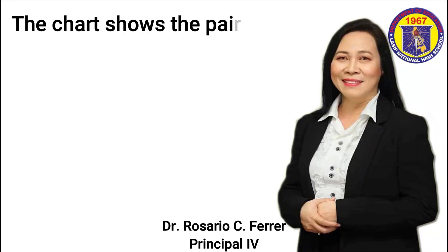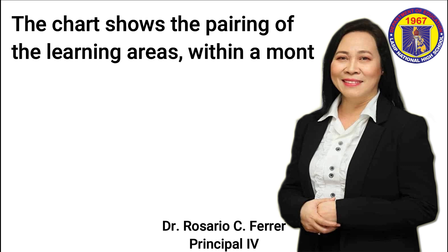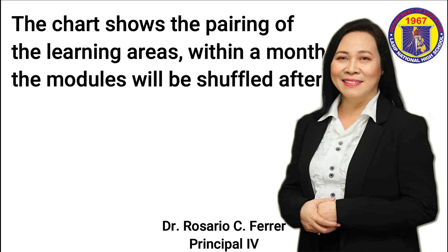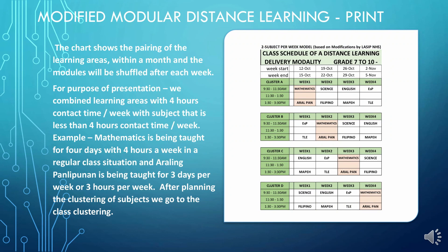The chart shows the pairing of learning areas within a month, and the modules will be shuffled after each week. For purposes of presentation, we combine learning areas with 4 hours contact time per week with subjects that have less than 4 hours contact time per week. For example, mathematics is taught for 4 days with 4 hours a week in a regular class situation, and Araling Panlipunan is taught for 3 days per week or 3 hours per week. After planning the clustering of subjects, we go to the class clustering.